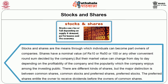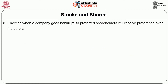The next is stocks and shares. Stocks and shares are the means through which individuals can become part owners of companies. Shares have a nominal value — for example, rupees 10, 50, or 100 — decided by the company. But the market value can change from day to day depending on the profitability of the company and the popularity it enjoys among the investing public. There are different kinds of shares, but the major distinction is between common stocks and preferred shares. The preferred shares entitle the owner to receive dividends before the owners of the common shares. Likewise, when a company goes bankrupt, its preferred shareholders will receive preference over the others.